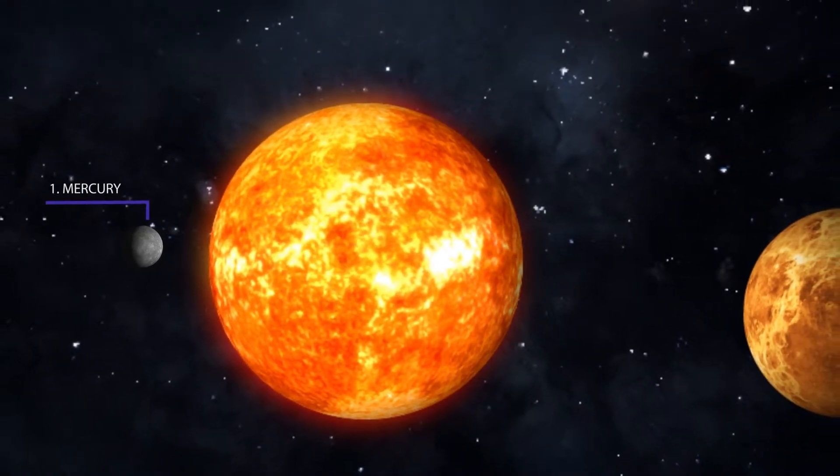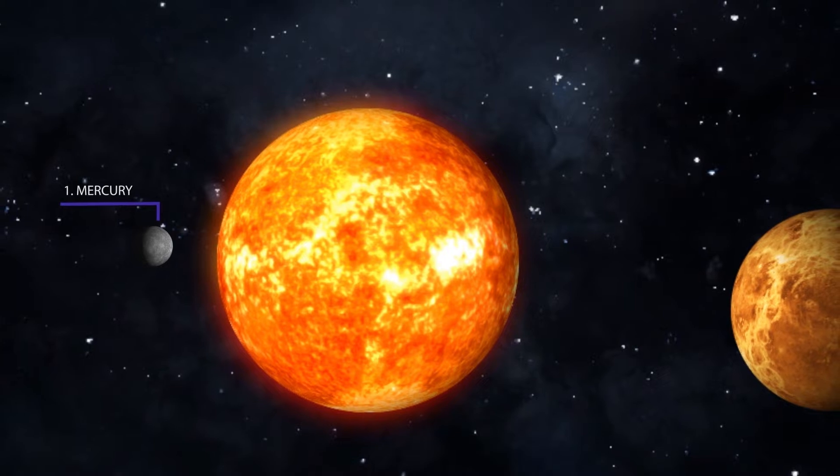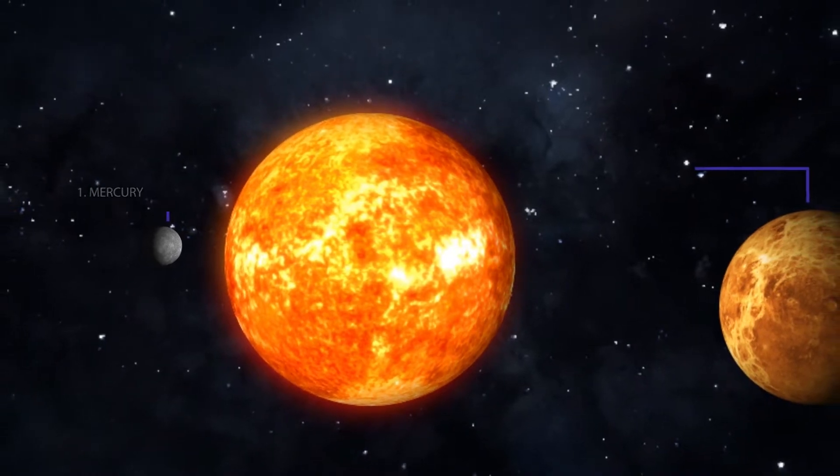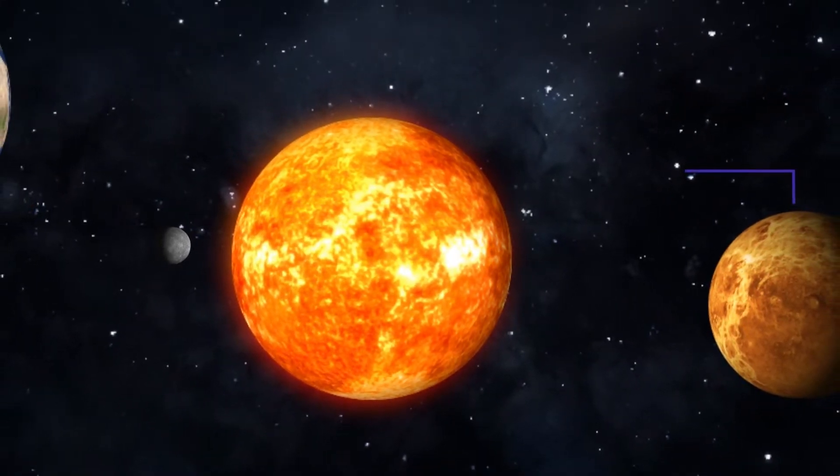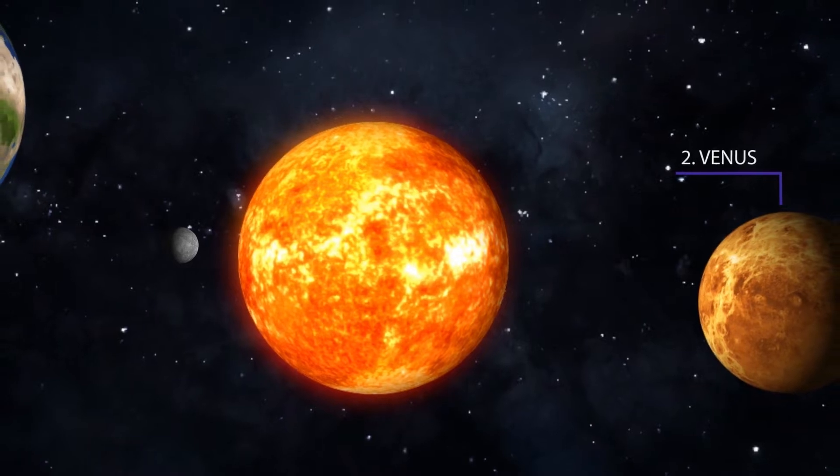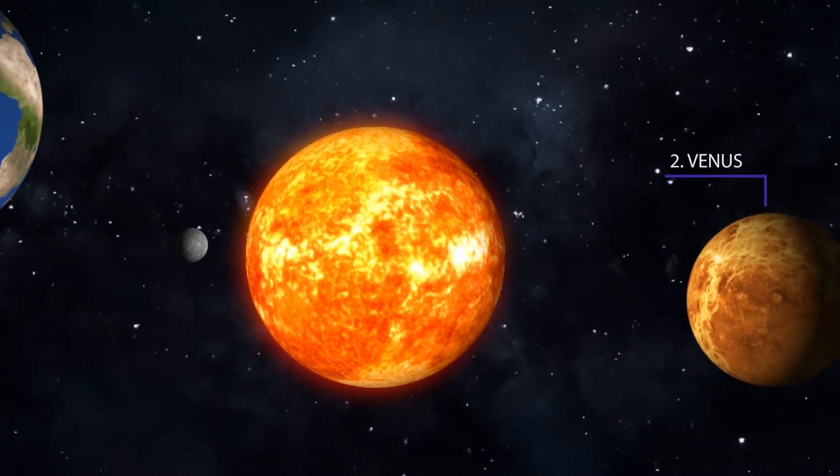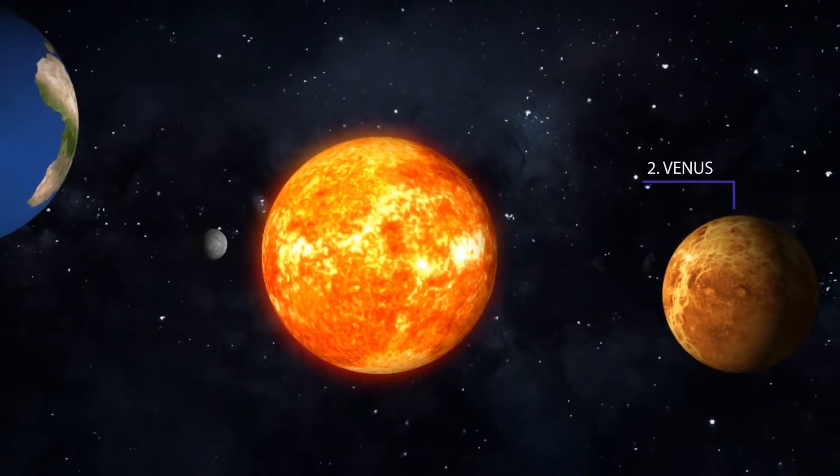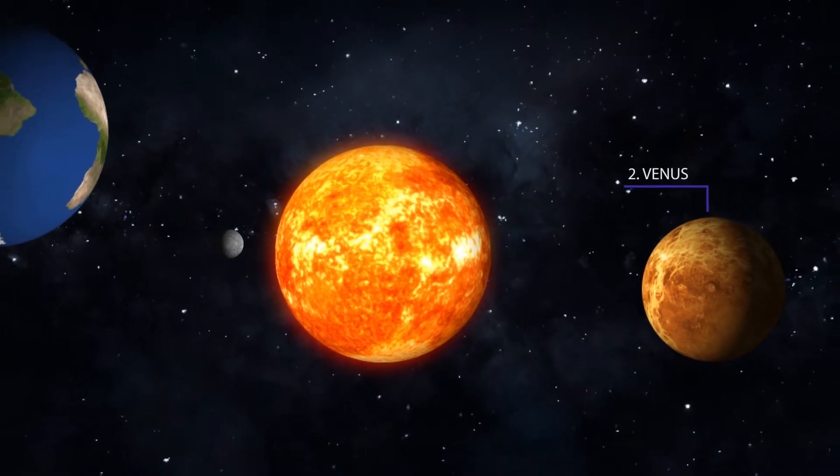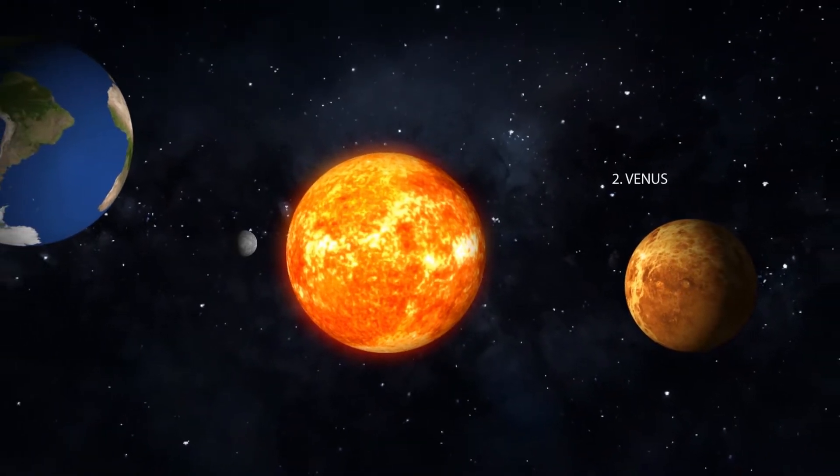The second planet closest to the sun is Venus. It is also the hottest planet. A fun fact is Venus spins slowly in the opposite direction from most other planets.